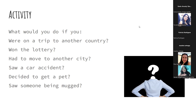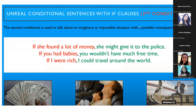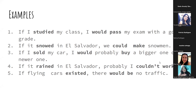Like these examples: 'If she found a lot of money, she might give it to the police.' 'If you had babies, you wouldn't have much free time.' 'If I were rich, I could travel around the world.' 'If I studied my class, I would pass my exam with a good grade.' 'If it snowed in El Salvador, we could make snowmen.' 'If flying cars existed, there would be no traffic.' So we're going to listen to more examples with a conversation.